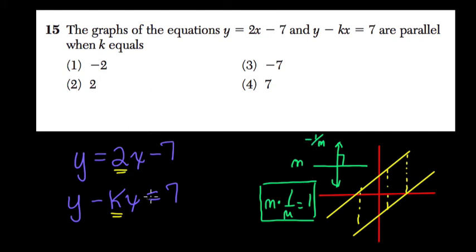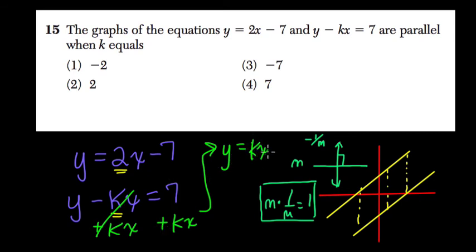So, which slope will be equal? Well, before I decide, I'm going to add kx to both sides. That's the key, because I want these two equations to look similar. And then if I simplify that, these cancel out, and I get y equals 7 plus kx, or kx plus 7.